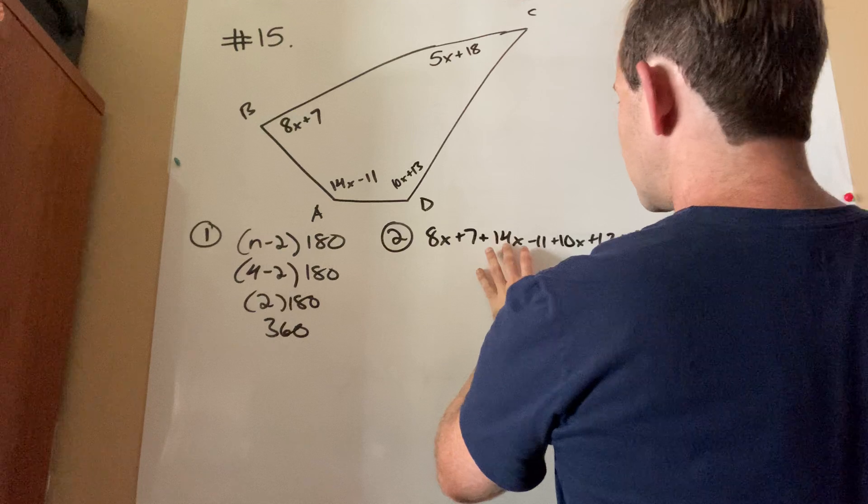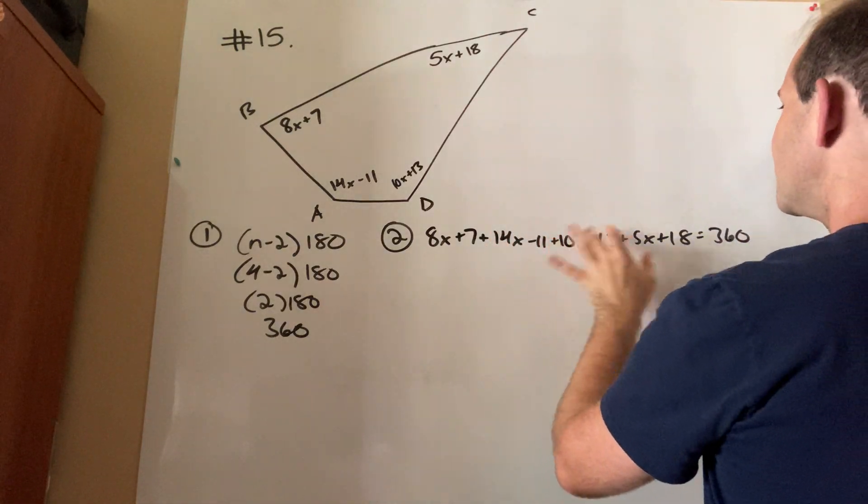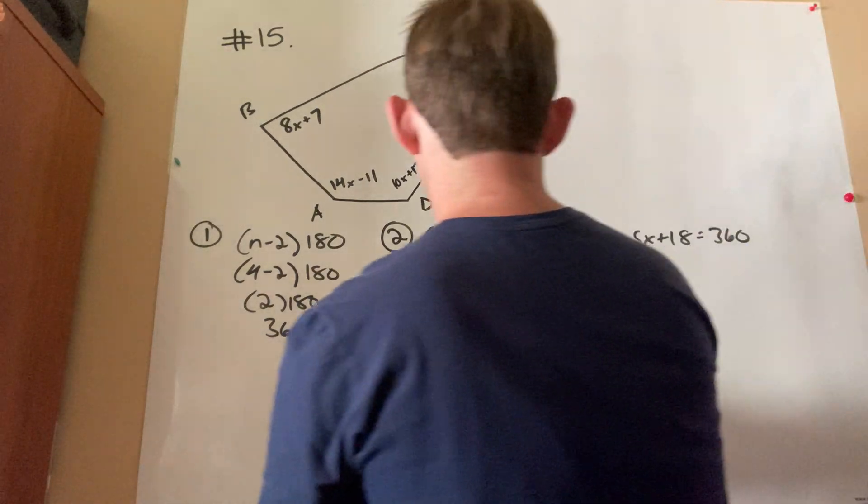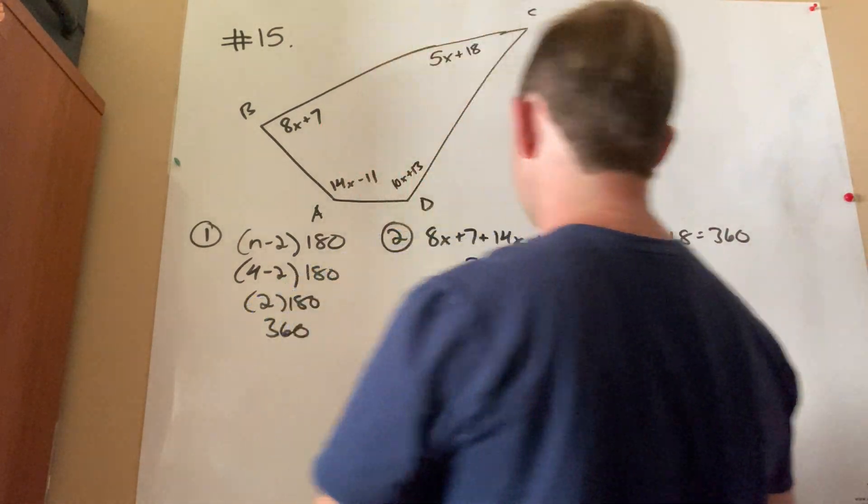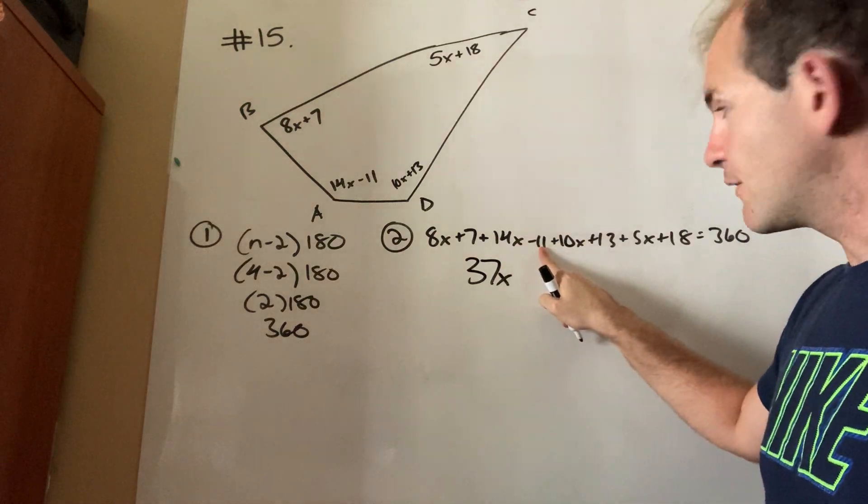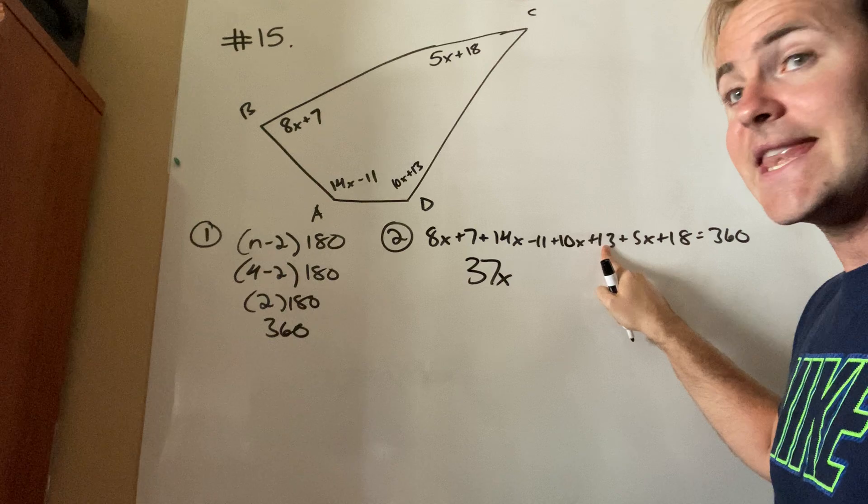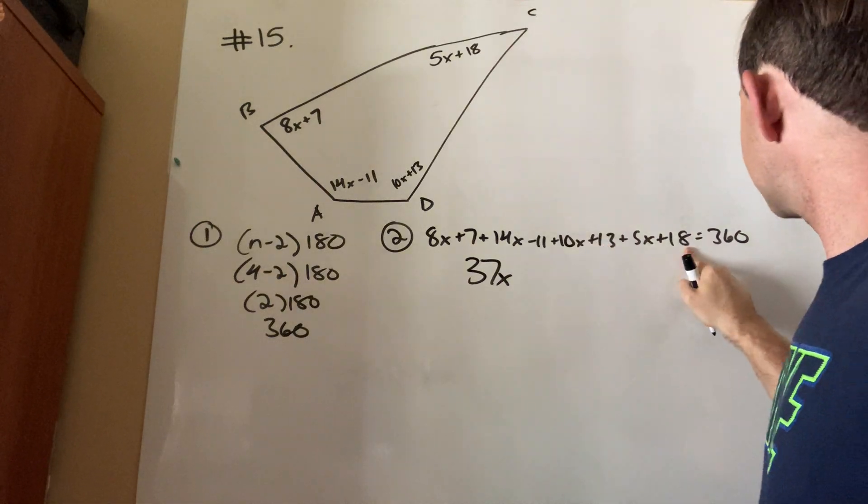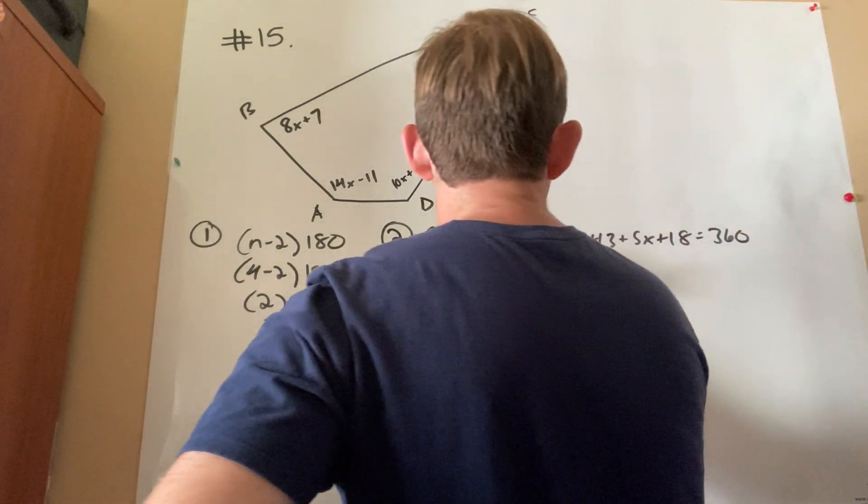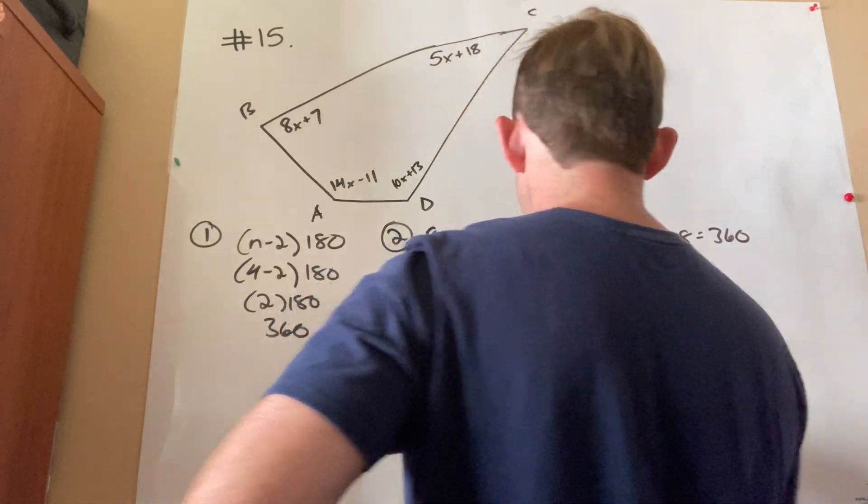So, technically speaking, there's this horrific looking equation. Many of you guys I know will probably prefer to just start combining like terms before you write it. And I suppose that's okay. Just make sure you don't make any silly mistakes with your integers. Okay. So, 8x and 14x make 22x. 22x and 10x make 32x. 32x and 5x make 37x. I combine those. 7 minus 11 is negative 4. Negative 4 plus 13 is positive 9. And 9 plus 18 is 27.